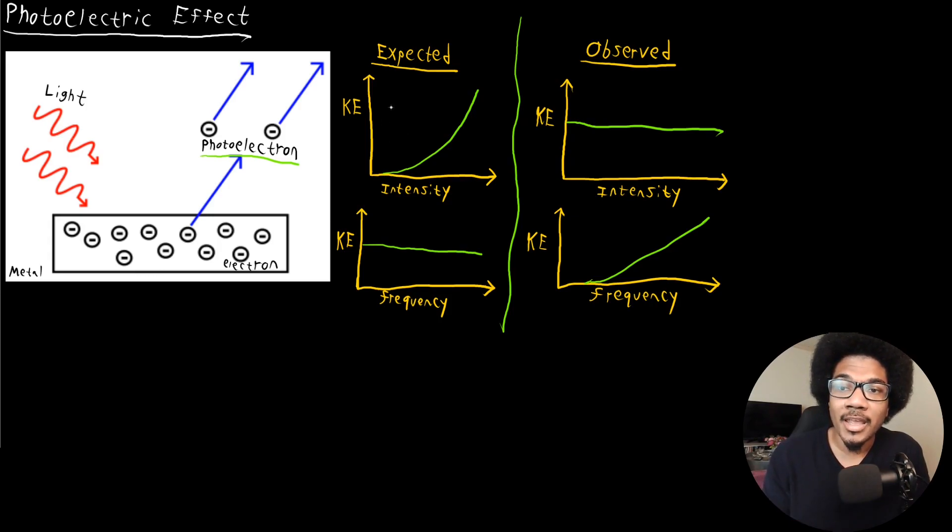So from classical mechanics, what they expected to happen is that you would eject more photoelectrons, eject faster photoelectrons if you came in with more intense radiation. So rather than changing the frequency of the light, you change the intensity of the light, and you'll produce faster, more energetic photoelectrons that way.